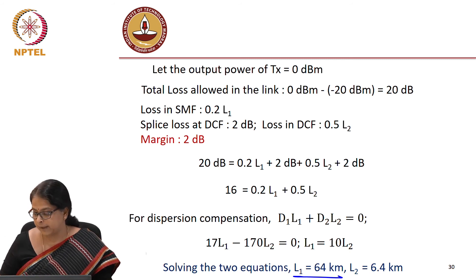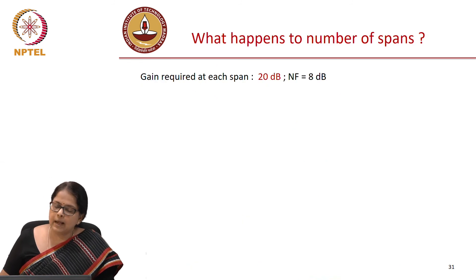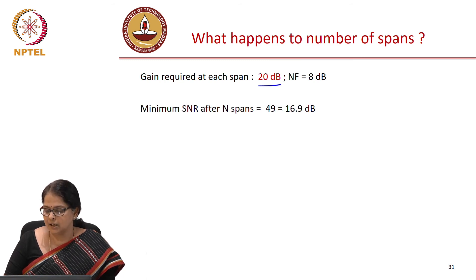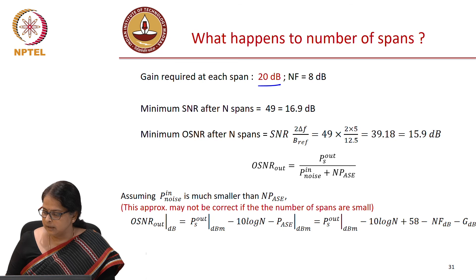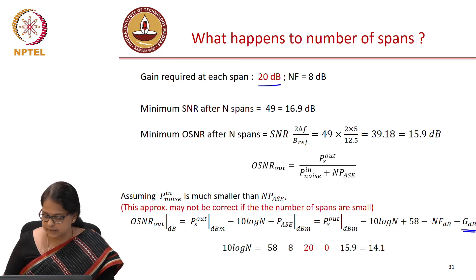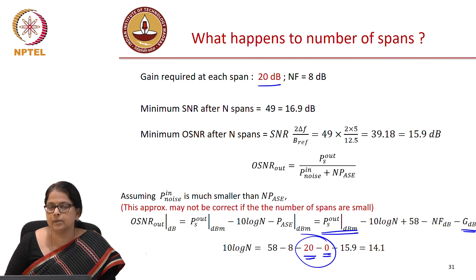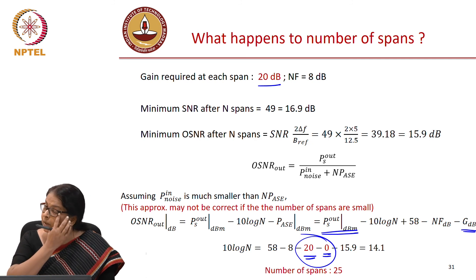That is a large jump. The DCF requirement also increases because we are now propagating through a longer span. The gain required in each span is now 20 dB. But the transmit power has also correspondingly changed, which means the total loss picture has not changed, so the total number of spans remains the same — still 25. This is how you go about designing spans of a longer length.